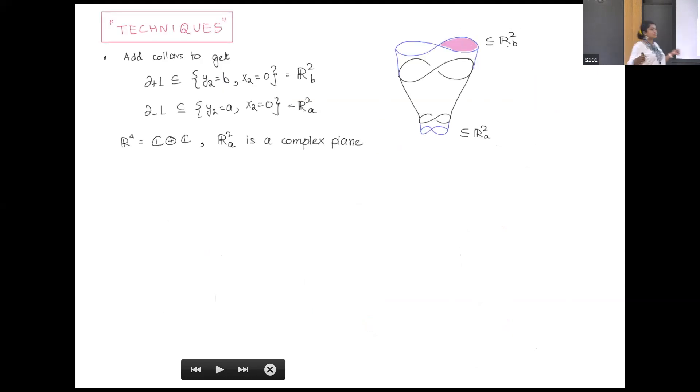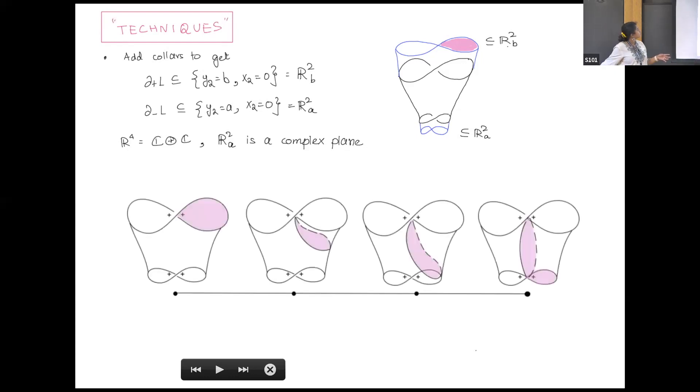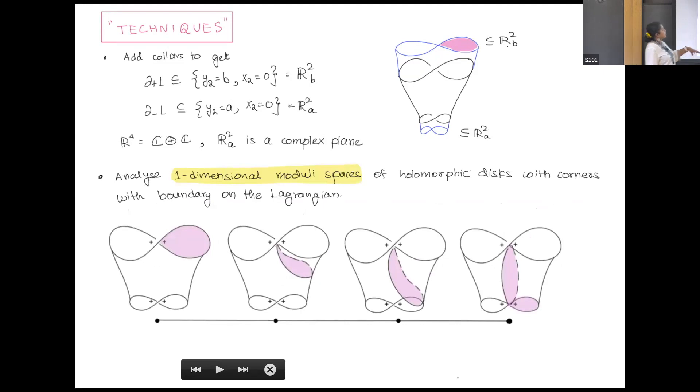Suppose we have a Lagrangian cobordism. It's an embedded object in R4. We add these small collars to close up these gaps so that now I have a closed Lagrangian. These boundaries are lying inside copies of R2. If I take the standard complex structure on R4, which is C times C, then this R2, which is the x1, y1 plane, is a complex plane. That pink disk that I've shaded in, it's a holomorphic disk with a corner. Now you can ask if that is allowed to move in R4, what does this moduli space look like, and what are its boundary points.